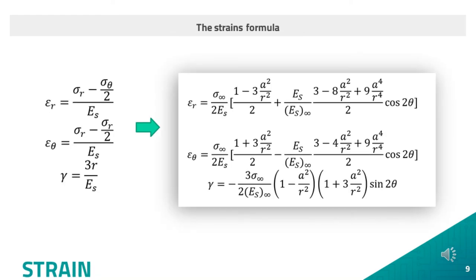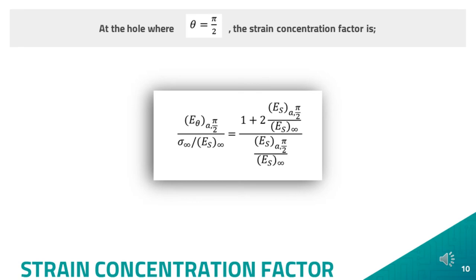Now, going to the strain formula, whereby from the standard strain formula, we shall insert the similar derived circumferential stress, radial stress, and shear stress equations as stated at the right-hand side of this slide. Upon inserting the highest concentration point, whereby theta is equivalent to pi over 2, thus the strain concentration factor is as stated in the slide.